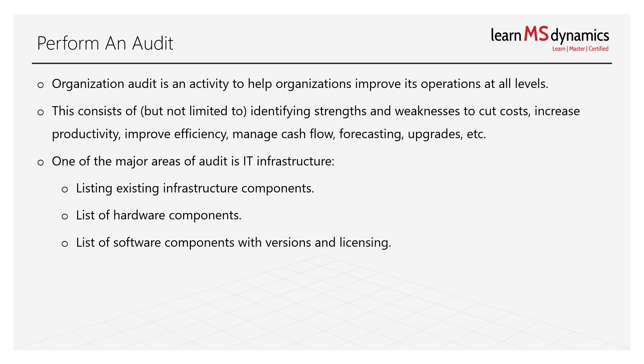When you perform this audit, you can identify whether a newer version of software is available and plan to upgrade. By listing how many licenses you have, you can easily identify how many more you'll need for growth. You also need to list down your subscriptions — software or services you pay for on a regular basis — along with the frequency of those payments.